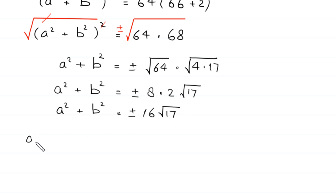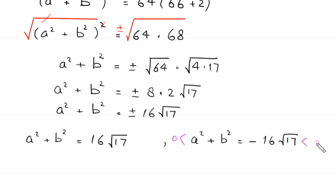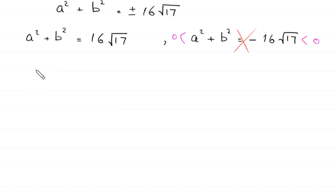This means a squared plus b squared equals positive 16 times root 17, or a squared plus b squared equals negative 16 times root 17. However, the sum of two squares is always positive, so the left hand side is greater than zero. The negative 16 root 17 case is less than zero, so it is not possible and must be rejected.